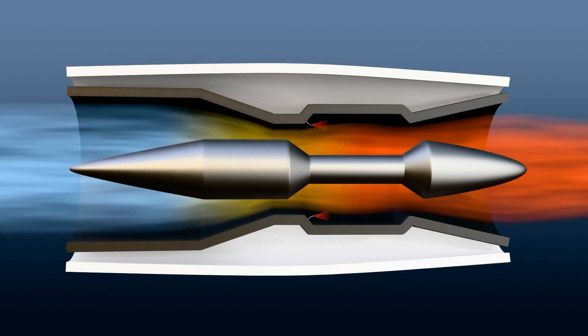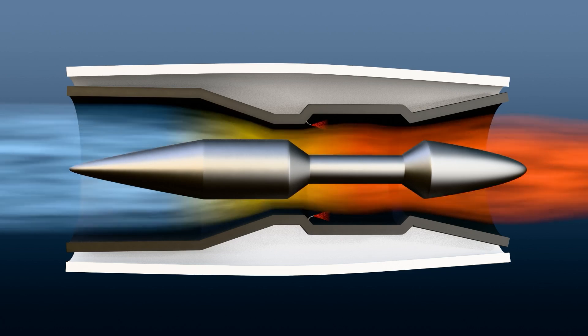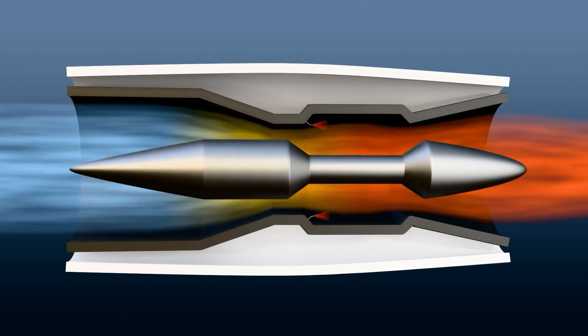Ramjets work efficiently at supersonic speeds, often exceeding Mach 3. They are commonly found in missiles and experimental aircraft. However, because they do not have a compressor, they cannot produce enough thrust to take off an aircraft. Instead, they can provide extra power to aircraft that also have turbojet or turbofan engines. Once the aircraft reaches supersonic speed, the ramjet can take over.